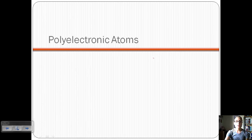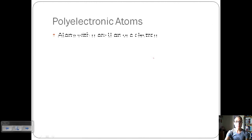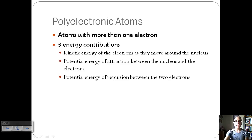Let's look at what are called polyelectronic atoms. It basically includes everything but hydrogen, because polyelectronic means that it has more than one electron. There are three energy contributions that these electrons can make.